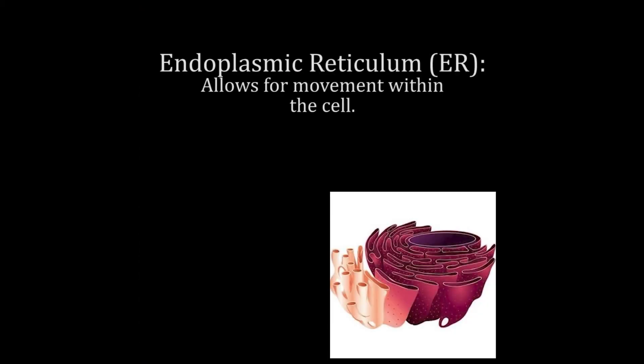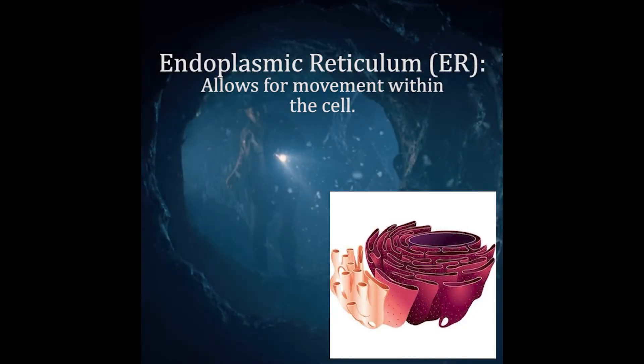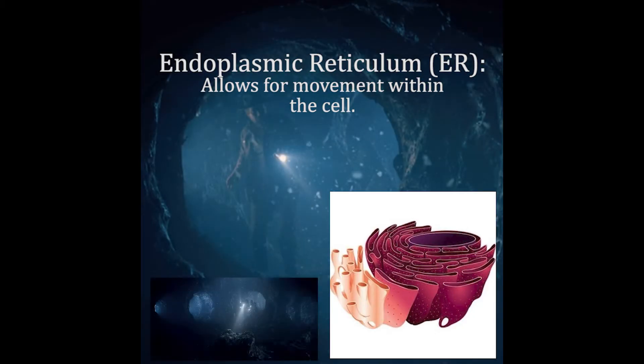Next, we have the endoplasmic reticulum, or the ER, which basically allows for movement around the cell. The comparison to Stranger Things would be the hub. This was dug underground by demodogs, and they use it as their own passageways to allow for movement throughout the city.